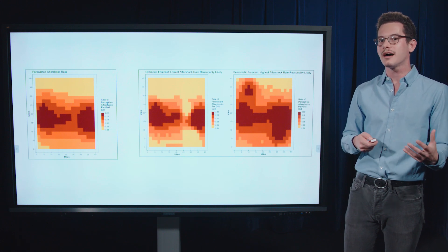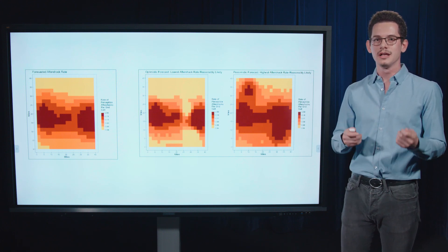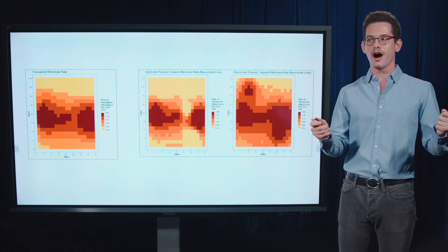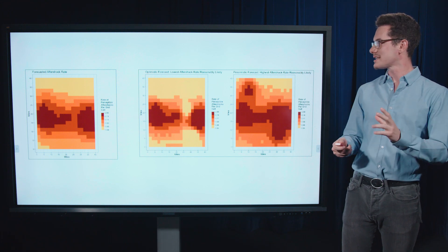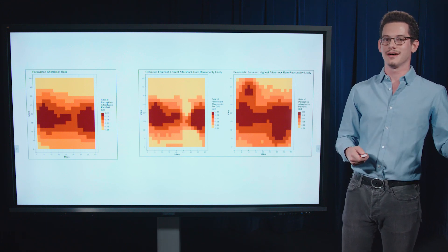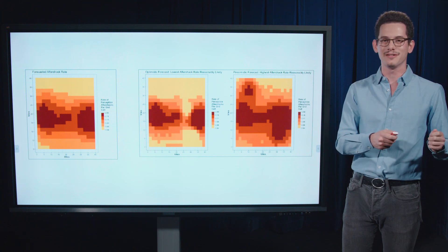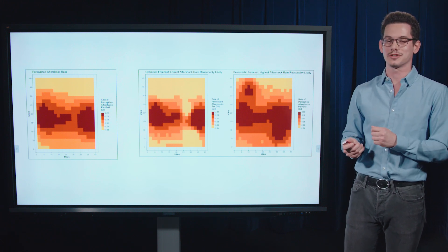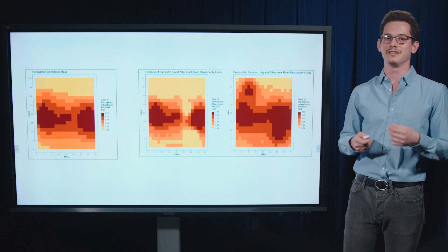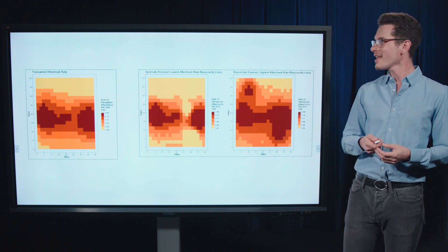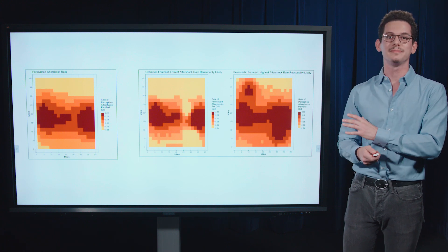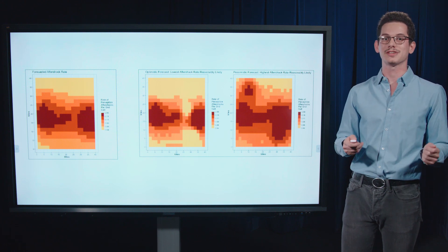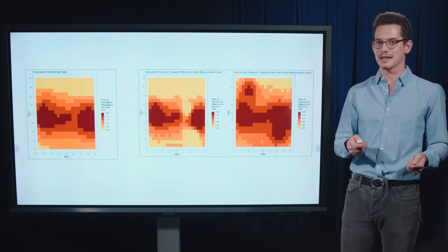So why not show kind of a confidence band of the forecast. So on the left side, we have the lowest end of the spectrum of the forecast distribution. And on the right side, we have kind of the highest aftershock rate that is reasonably likely given the forecast model. And so this approach is actually being used by a number of government agencies, this kind of upper and lower bound maps of the forecast distribution. So we wanted to test that as well.